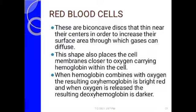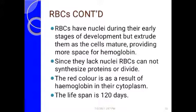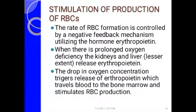Red blood cells do not have a nucleus in their mature form — the nucleus is destroyed during maturation to increase surface area for hemoglobin. Without a nucleus they cannot undergo cell division. Red blood cells are produced in the red bone marrow and have a lifespan of 120 days, after which they die and are replaced by new cells produced in the bone marrow.